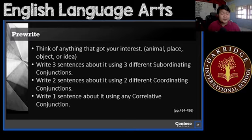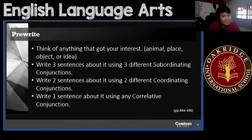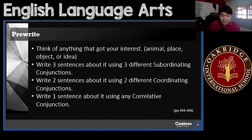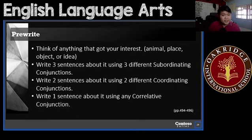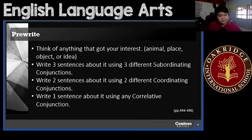You will also write two sentences about it using two different coordinating conjunctions. Remember FANBOYS: for, and, nor, but, or, yet, so. And lastly, use one sentence about it using any correlative conjunction — there are many, such as either/or, neither/nor, and others like that. So in total for your pre-write: three different subordinating conjunctions, two different coordinating conjunctions, and one correlative conjunction.